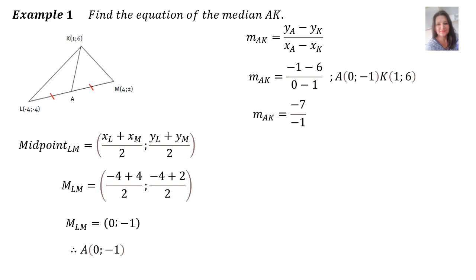And then the gradient for AK is 7. We want the equation, therefore y is mx plus c. We know that m is 7 now. And then let's substitute the point A, 0, negative 1. And this point consists of an x and a y. So in y's place we substitute negative 1. In x's place we substitute 0. We work out c and it's minus 1. Therefore, the equation of the median is y is 7x minus 1.